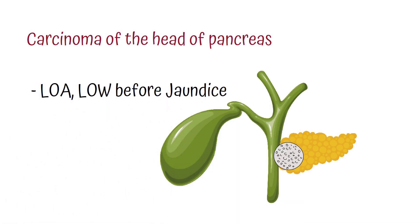In carcinoma of the head of the pancreas, the patient will have loss of appetite and loss of weight before jaundice. This is because it takes time for the carcinoma to grow and obstruct the common bile duct. So they will first have loss of appetite and loss of weight, and then when the carcinoma grows bigger, they will have jaundice.